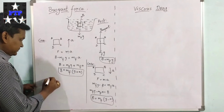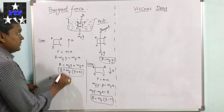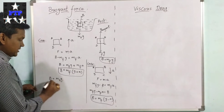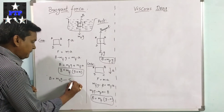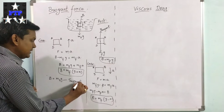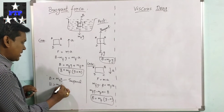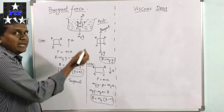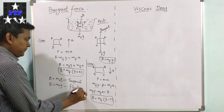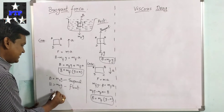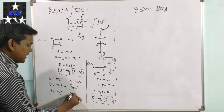If the mass of the object times gravity equals the biont force, the body will suspend. If the biont force is greater than the weight of the object, the body will float. If the biont force is less than the weight of the object, the body will sink.